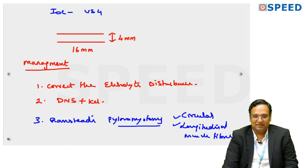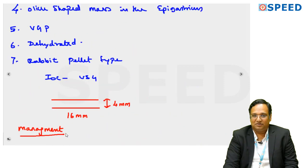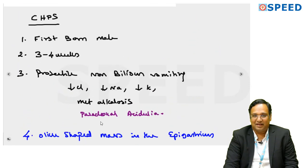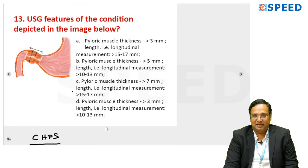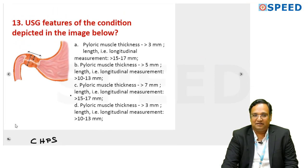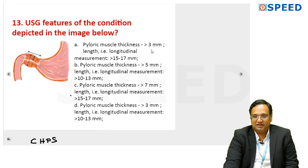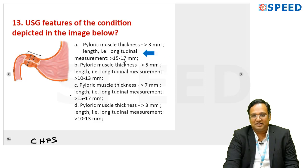So this is about the treatment for congenital hypertrophic pyloric stenosis. Now I have discussed the entire topic. Let us move on to see what is given in the question. It is very clear that the pyloric muscle thickness will be more than 3 mm and the longitudinal measurement will be 15 to 17 mm. The answer will be option A.